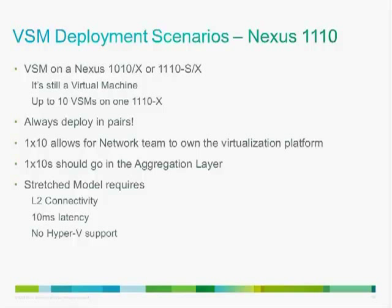You can also put the VSM on a Nexus 1110 or 1010 appliance — a hardware appliance Cisco sells for network teams who want to own the virtualization platform. The VSM still runs as a VM on the appliance, with 6 or 10 VSMs per appliance depending on model. Always put the appliances in the aggregation layer. A stretched model is also supported with appliances, with the same requirements: Layer 2 connectivity between data centers and 10-millisecond latency. Hyper-V is not yet supported in this mode.